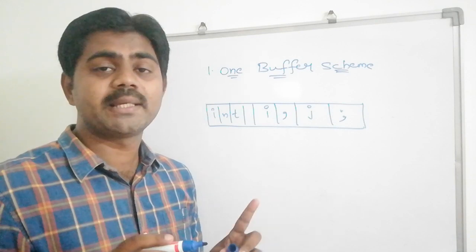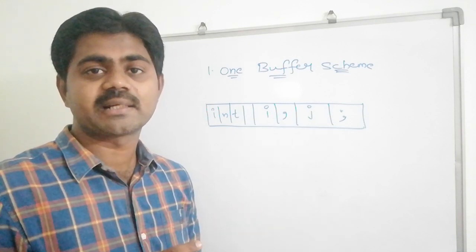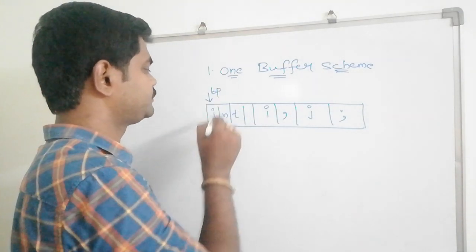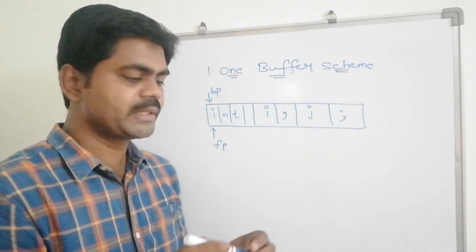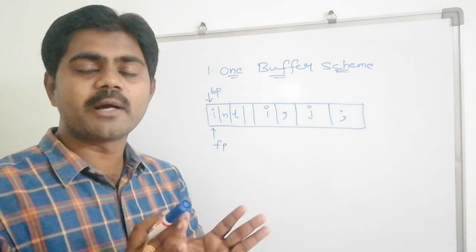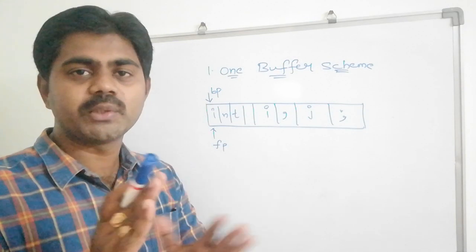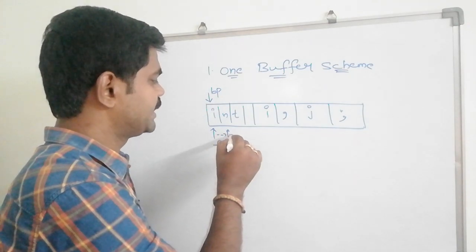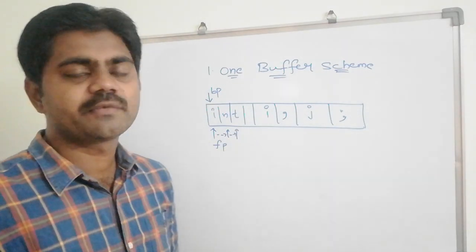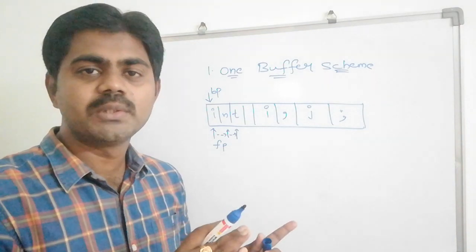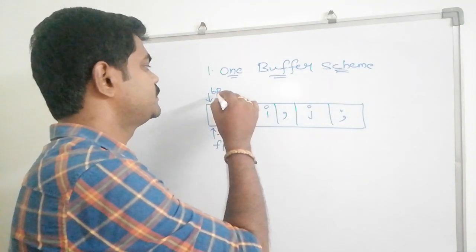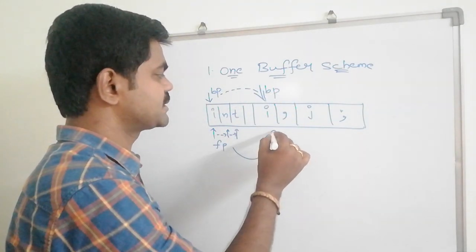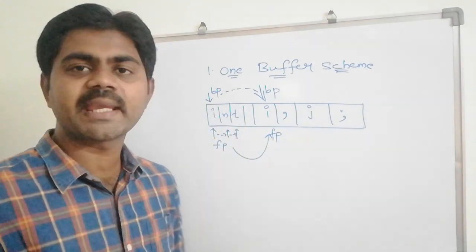Both pointers start at the first character. The first character here is 'I', so BP is Begin Pointer and FP is Forward Pointer. The Forward Pointer will move one position to the right, come to the next character, and when it encounters a blank space, Begin Pointer jumps to 'I' and Forward Pointer starts again. The same process applies.